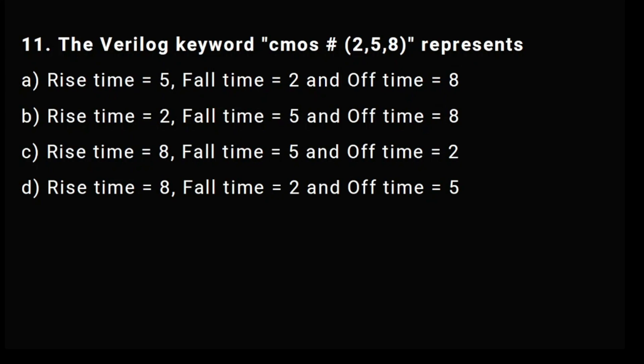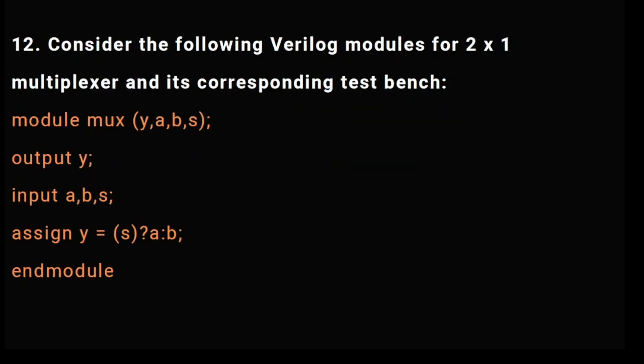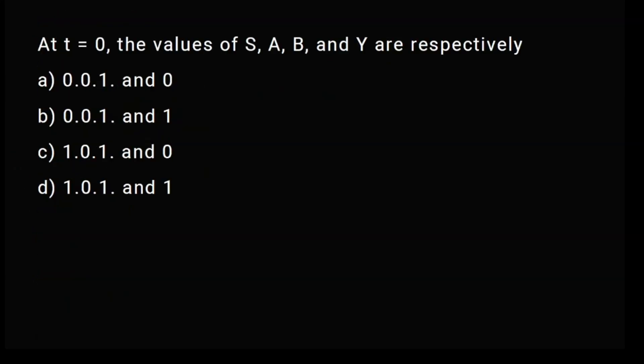Consider the following Verilog code for multiplexer and testbench. At t=0, the values of S, A, B, and Y are respectively what?